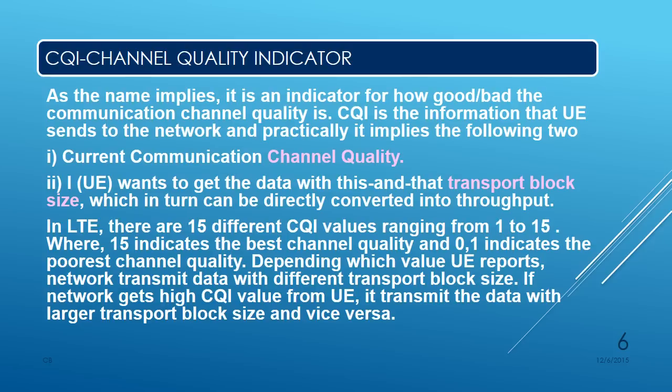The transport block size is an important factor in throughput. CQI has values from 1 to 15, where 15 indicates the best channel quality and 1 indicates poor channel quality. Based on the CQI value reported by the user equipment, the network transmits data with different transport block sizes, which decides the throughput. This CQI value is transmitted via the Physical Uplink Control Channel (PUCCH) when there is no uplink data, and via the Physical Uplink Shared Channel (PUSCH) when there is uplink data to be transmitted.